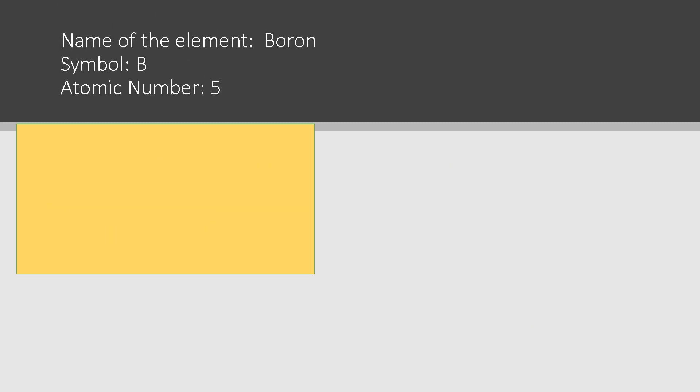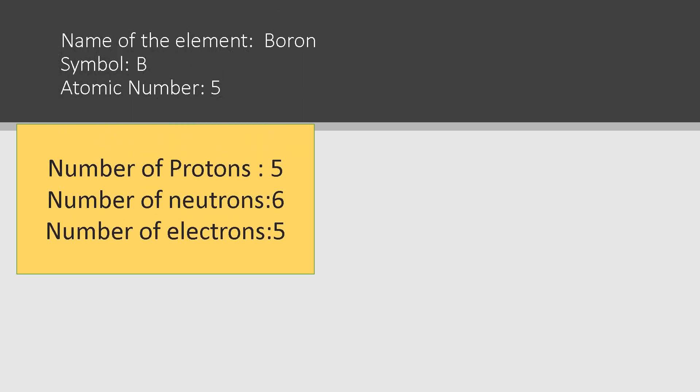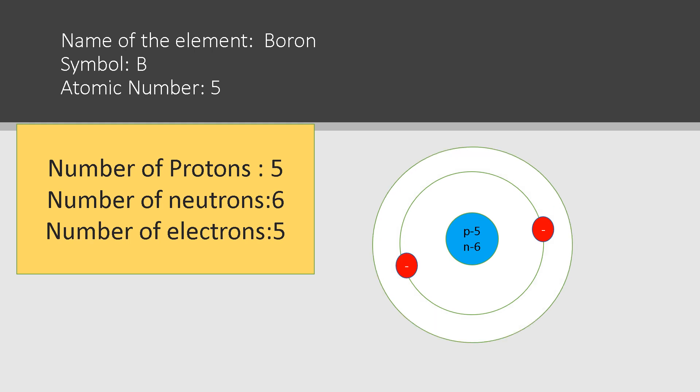Boron: symbol is B and atomic number is five. Number of protons five, number of neutrons six, number of electrons five. The electronic configuration is two electrons in the first orbit and three in the second orbit. Applying the octet rule: K shell has two electrons, L shell has three electrons. Since the outer shell has three electrons, which is less than five, boron donates these electrons for stability. The valency of boron is three.